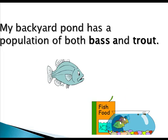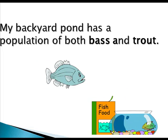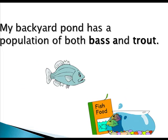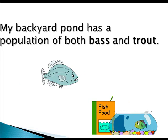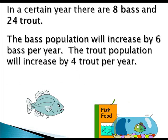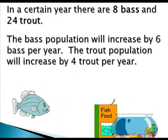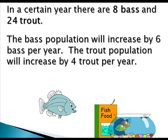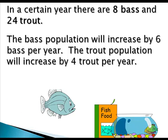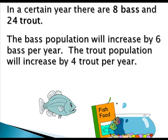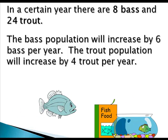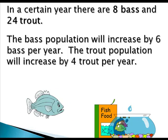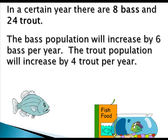My backyard pond has a population of both bass and trout. In a certain year there are eight bass and 24 trout. The bass population will increase by six bass per year and the trout population will increase by four trout per year.